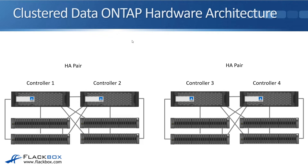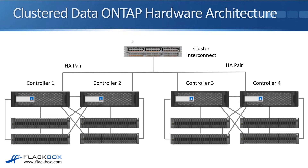That arrangement gives you redundancy for a single point of failure. If Controller 1 goes down, Controller 2 can take over, and if Controller 3 goes down, Controller 4 can take over. With our two HA pairs, we need all controllers to also be connected together. This is where Clustered ONTAP differs from 7-mode: we have the addition of a Cluster Interconnect Network, which is an Ethernet network that every controller is connected to, so they can share configuration and run-state information with each other. Data can also travel over it as well.